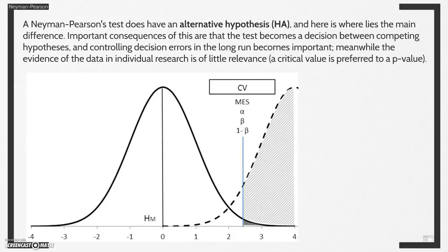A Neiman-Pearson test does have an alternative hypothesis, and here is where lies the main difference. Important consequences of this are that the test becomes a decision between competing hypotheses, and controlling decision errors in the long run becomes important. Meanwhile, the evidence of the data in the individual research is of little relevance, and for example, a critical value is preferred to a p-value.